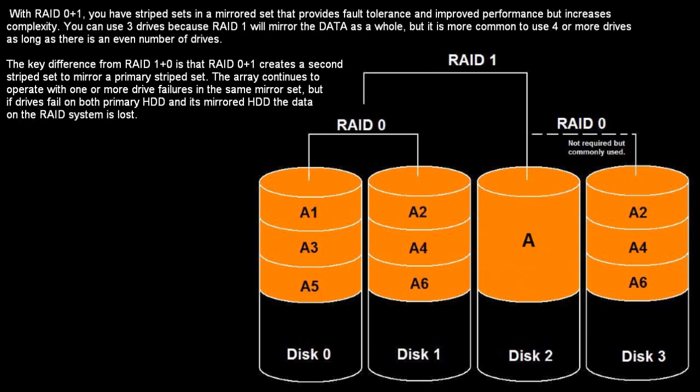With RAID 0 plus 1, you have a striped set in a mirrored set that provides fault tolerance and improved performance, but increases complexity. You can use three drives because RAID 1 will mirror the data as a whole, but it is more common to use four or more drives as long as there is an even number. The key difference from RAID 10 is that RAID 0 plus 1 creates a second striped set to mirror a primary striped set. The array continues to operate with one or more drive failures in the same mirror set, but if drives fail on both the primary hard drive and its mirrored hard drive, the data on the RAID system is lost.